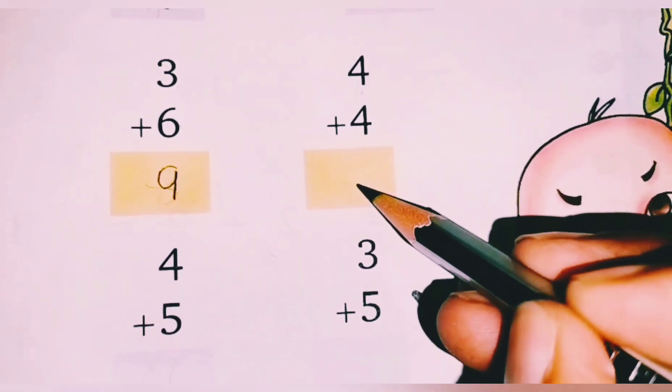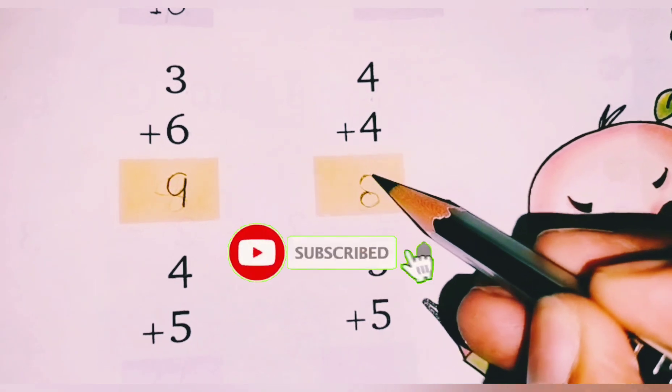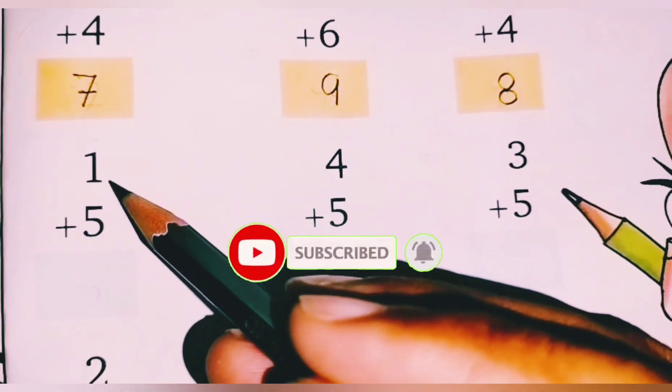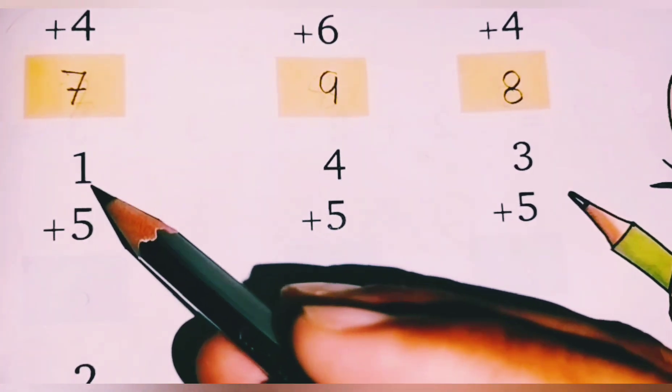4 plus 4 equals 8. 4 plus 4 equals 8. Okay, and then the next number is 1. 5, 4 plus 5 equals 6.